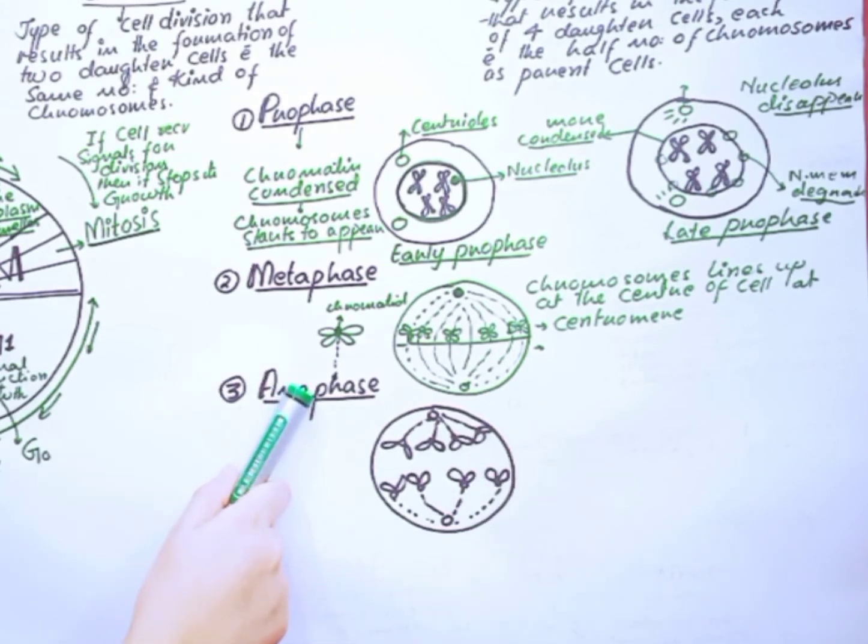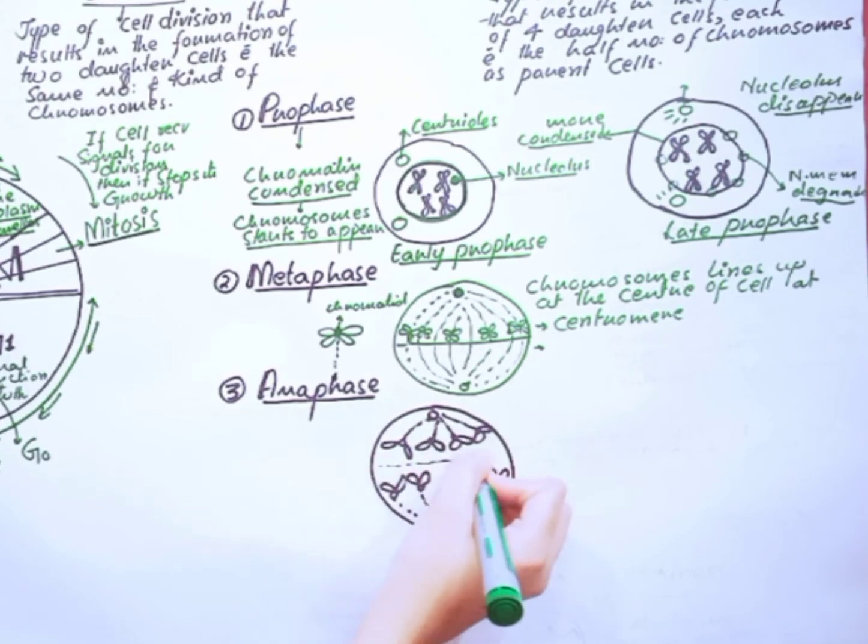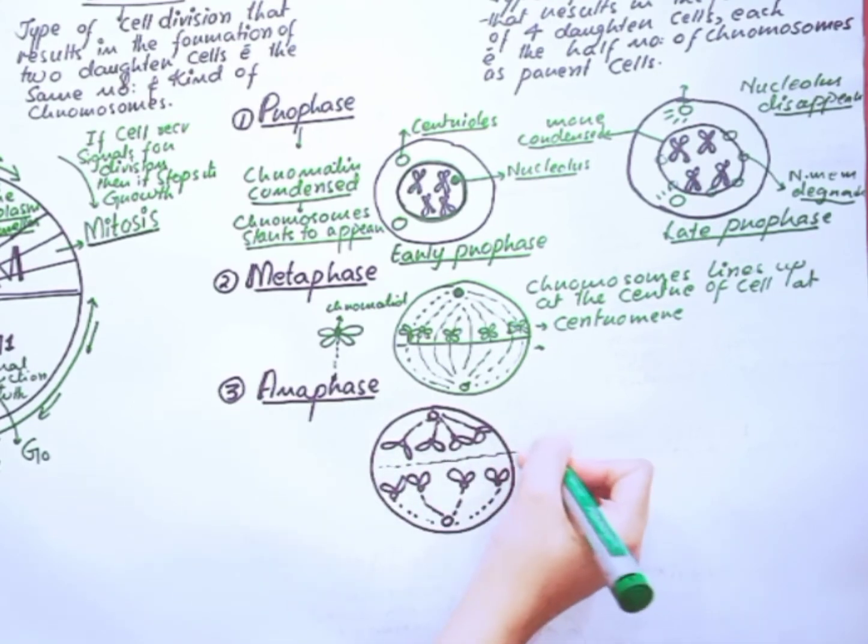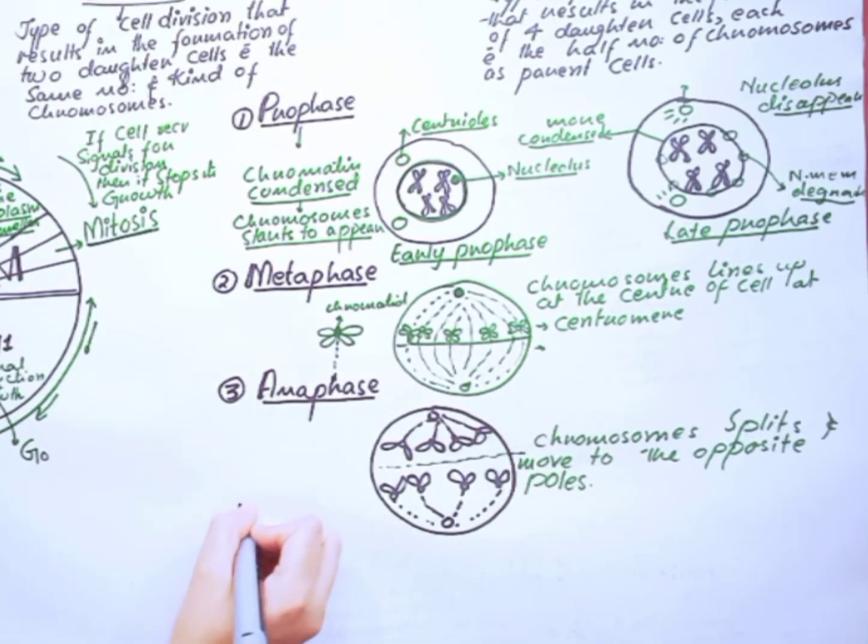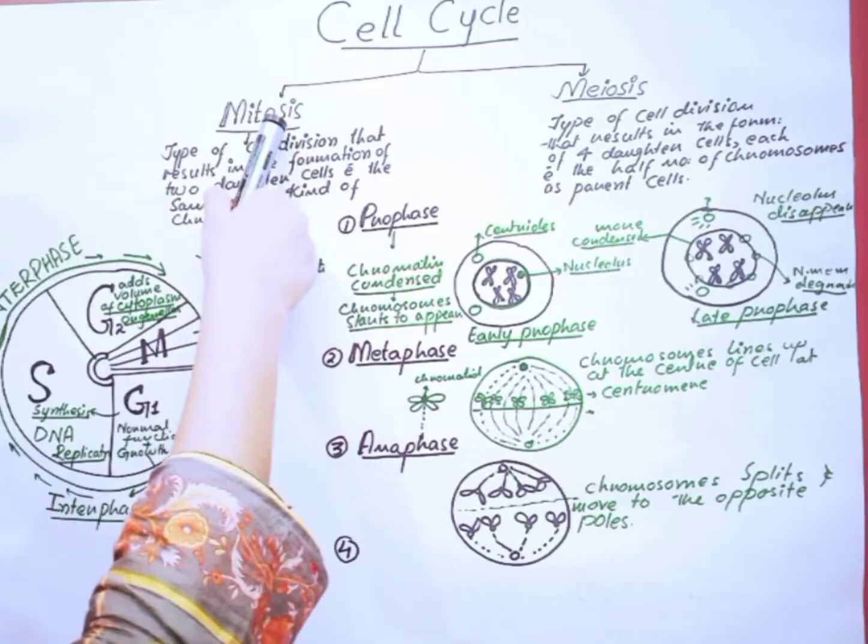Next we have anaphase. The chromosomes split and arrange to the opposite poles.